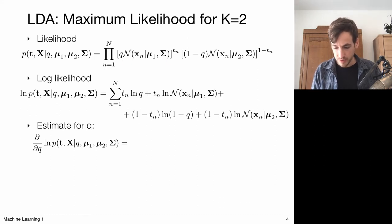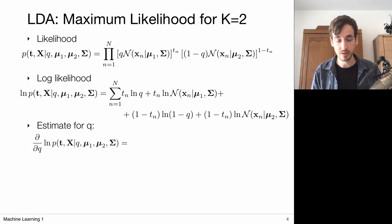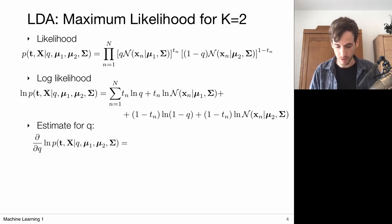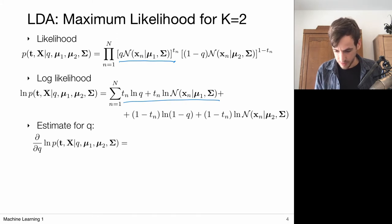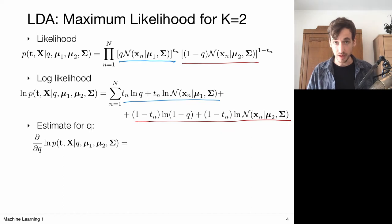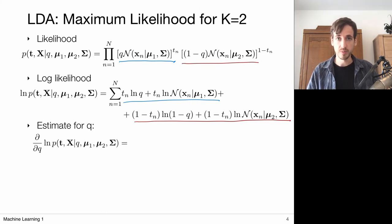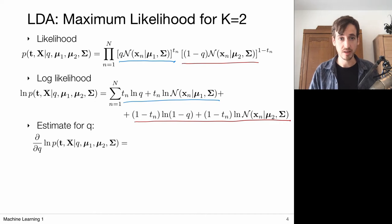Focusing on one distribution, taking the log of something to the power t_n allows us to bring the power in front. This gives us the log of my first and second joint probabilities. Now we're going to maximize the log likelihood by the usual principles: compute the derivative with respect to the parameter, set it to zero, and solve. We start off by estimating q, the prior probability.